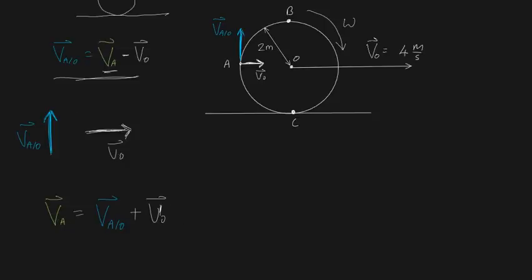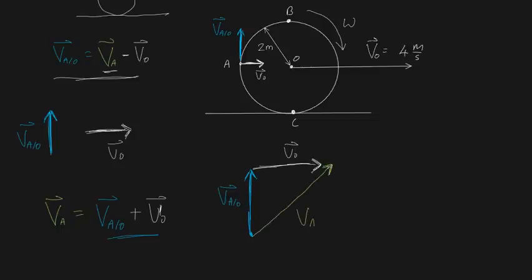Making VA the subject: VA equals VAO plus VO. From vector algebra, we add these graphically head to tail. VAO is upwards, VO is to the right. VA is the resultant — from start to end. Because VAO is perfectly upward and VO is perfectly rightward, this forms a right-angled triangle, which means we're just one step away from using trigonometry to solve for VA.